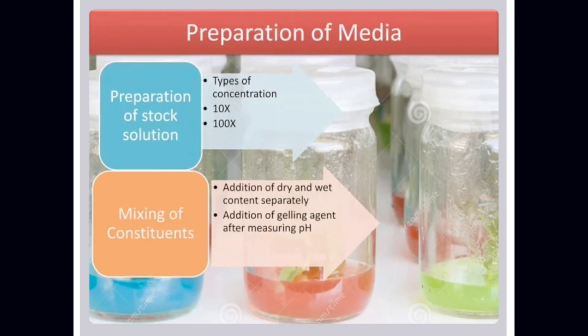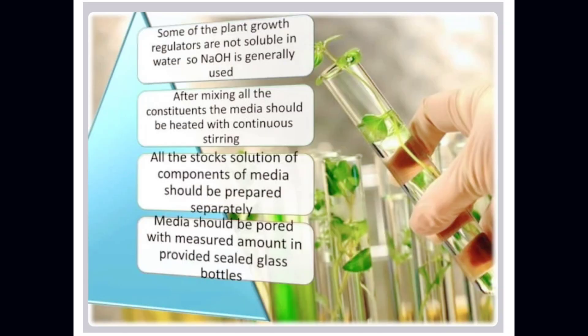Preparation of Media: Preparation of stock solution at type of concentration — 10x, 100x. Mixing of constituents involves addition of dry and wet content separately, then addition of gelling agent after measuring pH. Plant growth regulators that are not soluble in water, so NaOH is generally used. After mixing all the constituents, the media should be heated with continuous stirring. All stock solutions of media components should be prepared separately. Media should be poured in measured amounts into provided glass bottles.